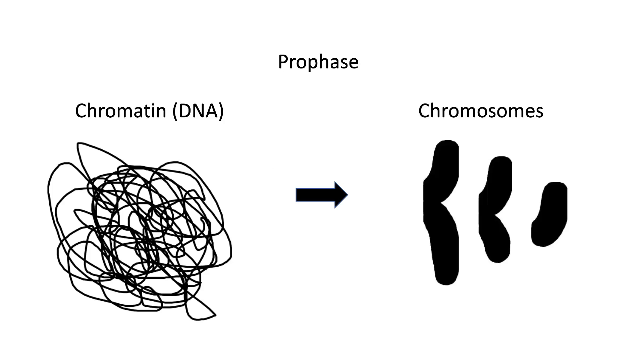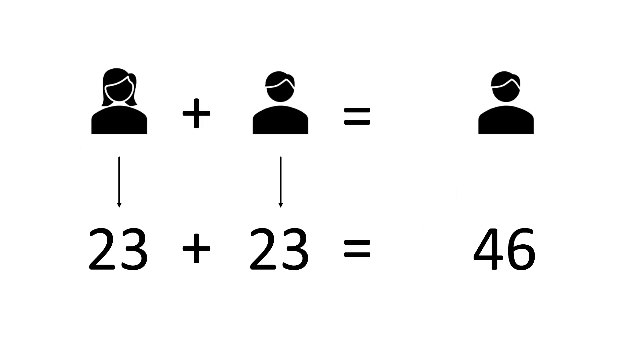At certain points in a cell's life cycle, the DNA will condense into pieces of genetic material called chromosomes. You have 46 chromosomes, 23 from your mother and 23 from your father.